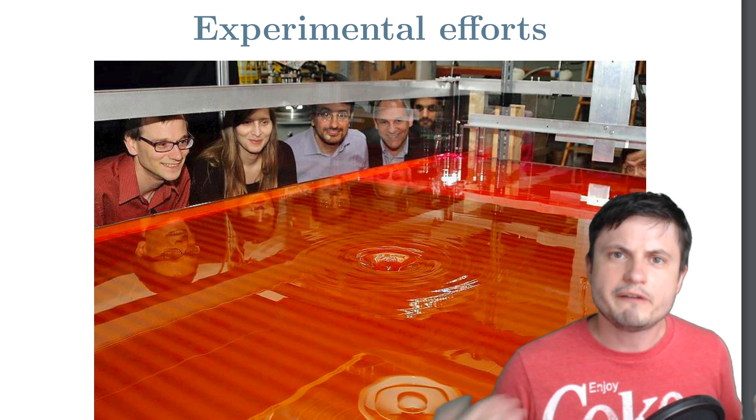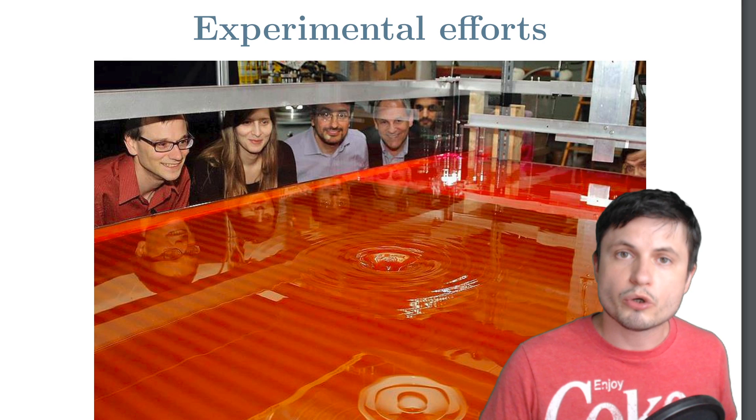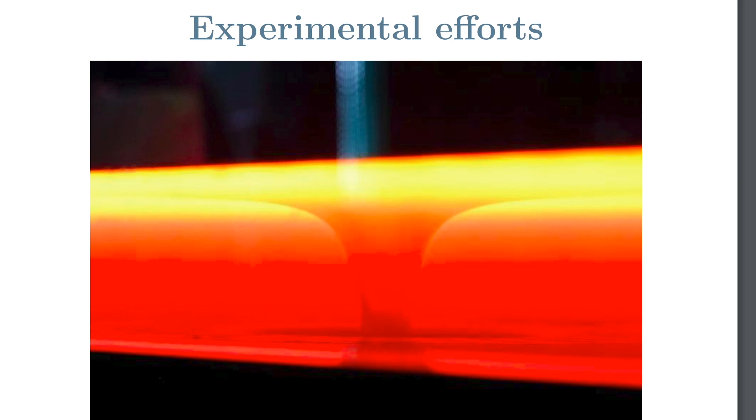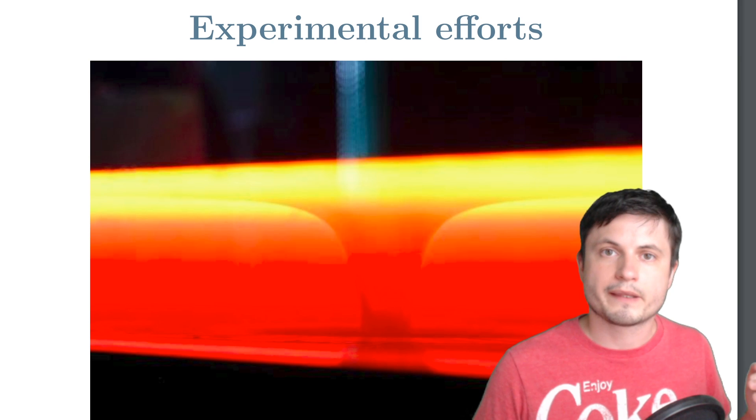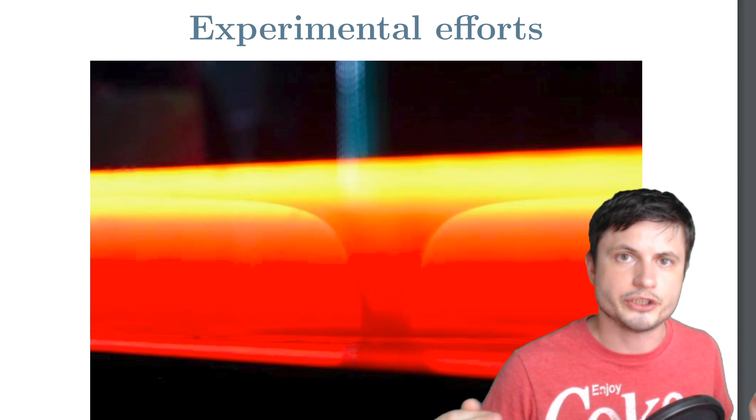And so the only way that the scientists have previously been able to kind of prove this super radiance is by using water and water waves. So essentially by having constant waves coming this way and then having an actual vortex that represented a black hole in the middle, there were certain phenomena showing that you can produce the super radiance inside water waves, thus allowing for a wave that leaves the vortex to have slightly more energy.